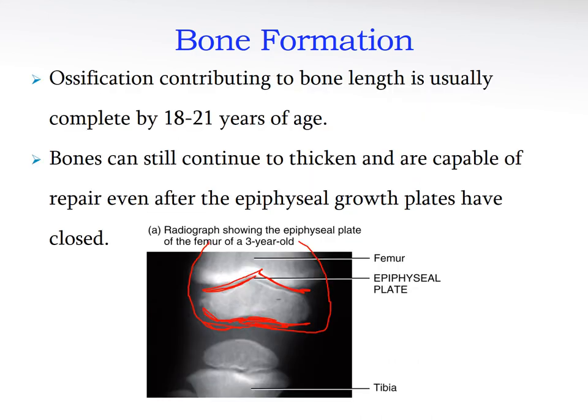The secondary ossification center starts as a small circle, grows in all directions, and meets the primary center. The part covering the top of the epiphysis always remains as articular cartilage. Growth occurs on average until 18 to 21 years of age — some people stop at 17 or 18, some continue past 21. It's not only about the amount of cartilage — hormones like growth hormone also play a role.